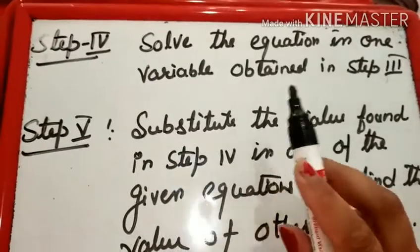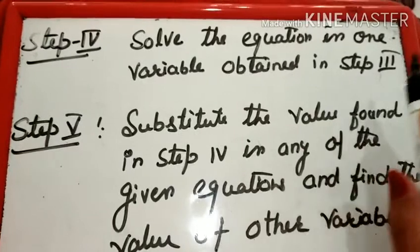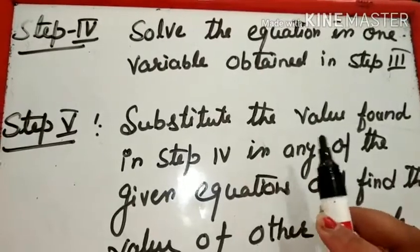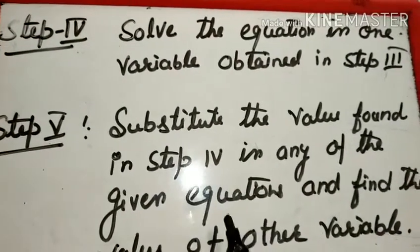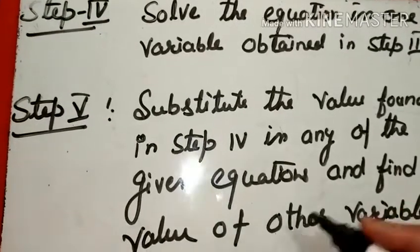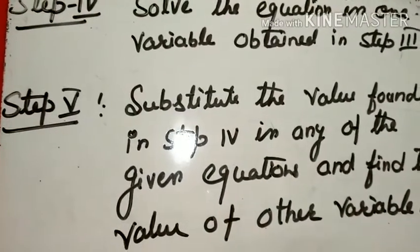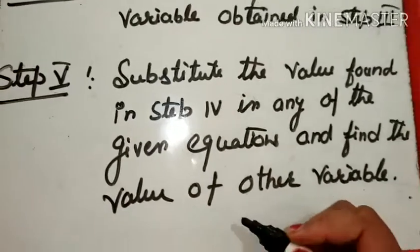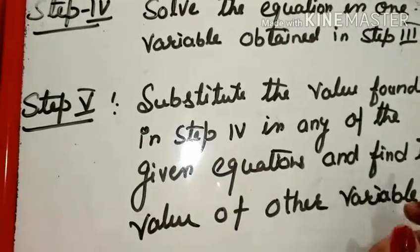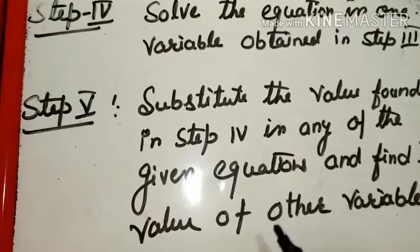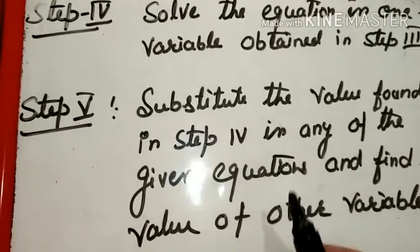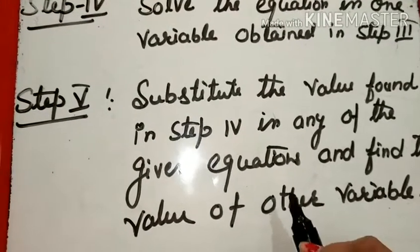Step 4 में हम Solve the Equation in One Variable obtained in Step 3 करेंगे। Coefficient Equate करके वो कट गया था, जो दूसरा Variable था उसको One Variable की Form में Solve करेंगे, इससे हमें One Variable की Value मिल जाएगी। फिर Next Step में जो Value मिली है उसको किसी भी Equation में — चाहे First वाली हो, चाहे Second वाली Given Equation — उसमें Put करेंगे। Step 5: Substitute the Value found in Step 4 in any of the Given Equations and Find the Value of the Other Variable।